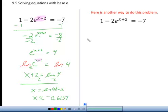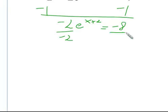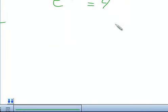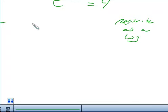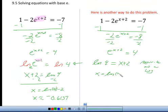The second method for this problem is a little bit shorter. Start the same way — isolate e, subtract 1, divide out negative 2. Then simply rewrite the equation in log notation: since the base is e, write ln(4) equals x plus 2, then subtract 2 from both sides to get the same answer. You should know both methods because on a test, you may need to recognize an intermediate step from either approach.